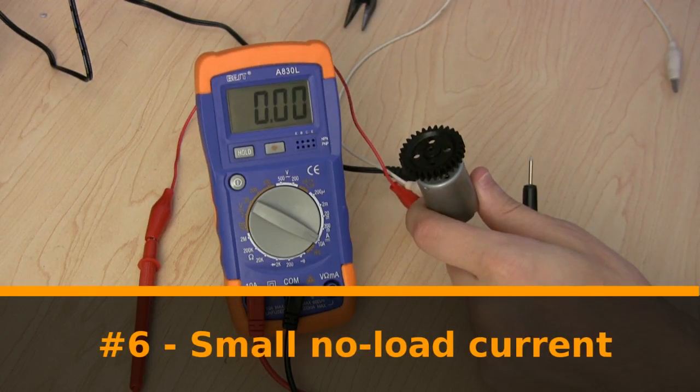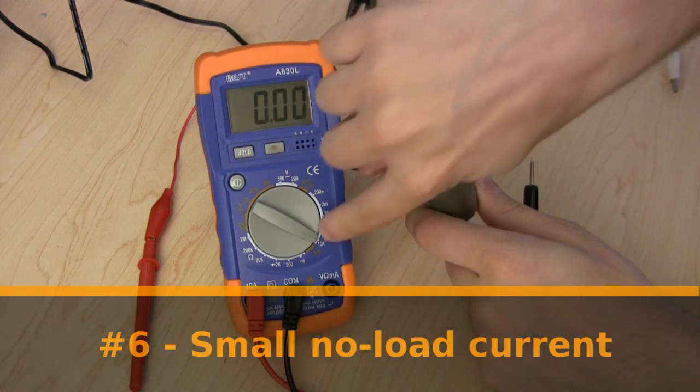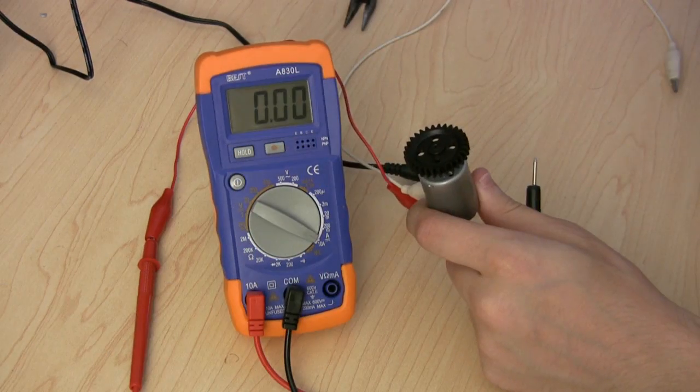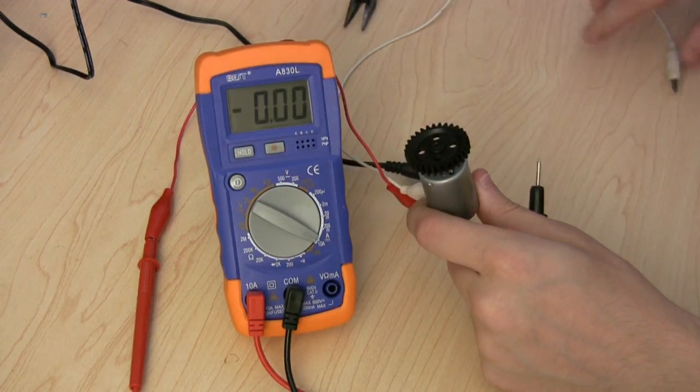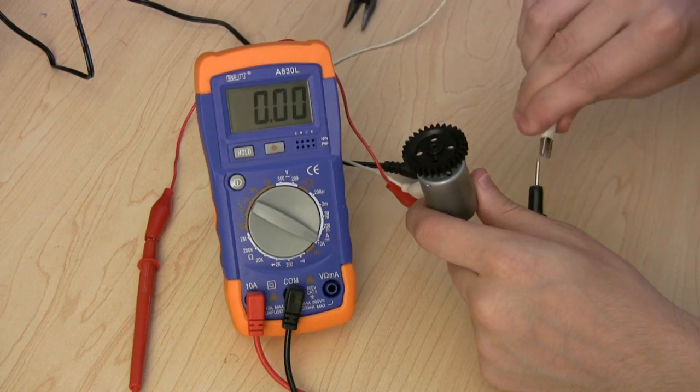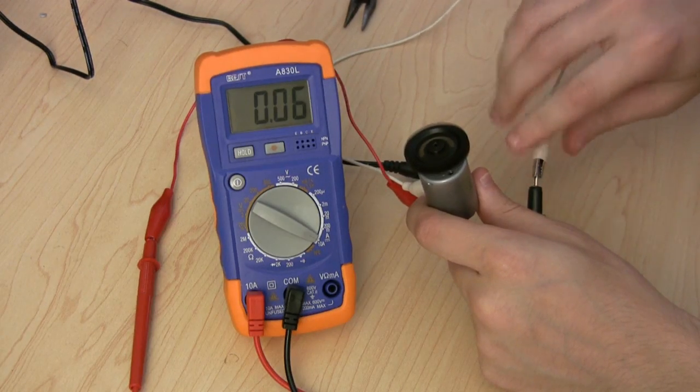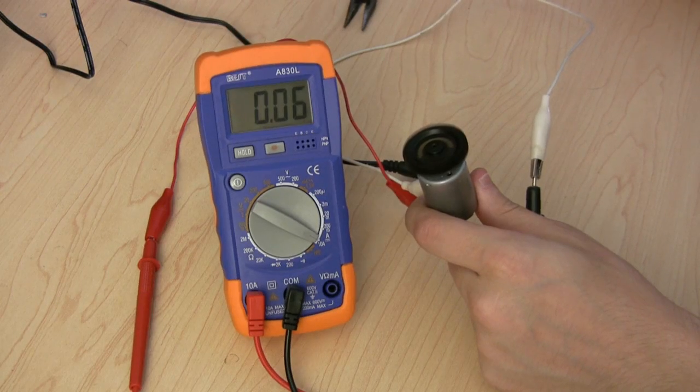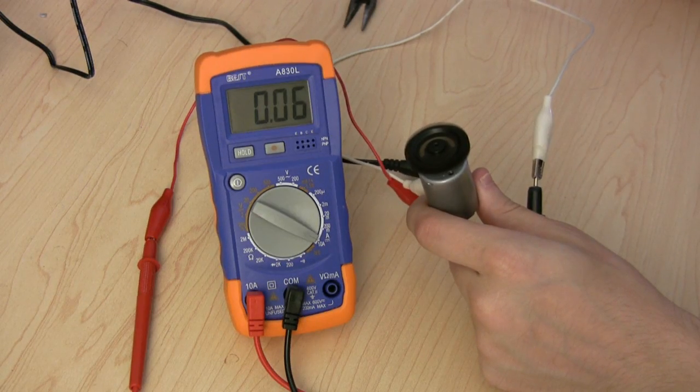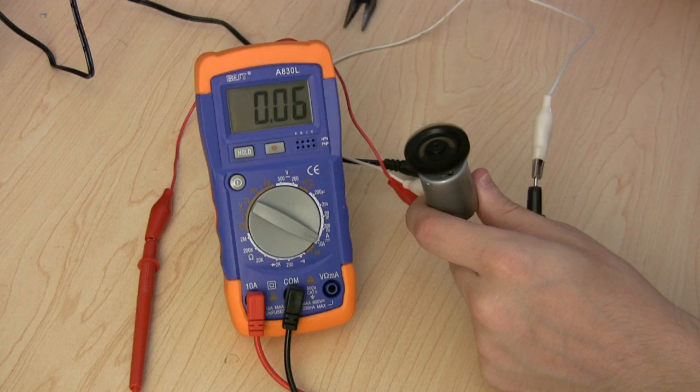Number six: We can take our full-size multimeter, put it on the 10 amp max current measuring mode, and wire it in series with the motor. You might think that we take the 9 volts of the power supply, and divide by 9 ohms of the motor resistance, and get about an amp. But when we actually measure it, we get a much smaller current, only about 0.06 amps when the motor is running with no load.